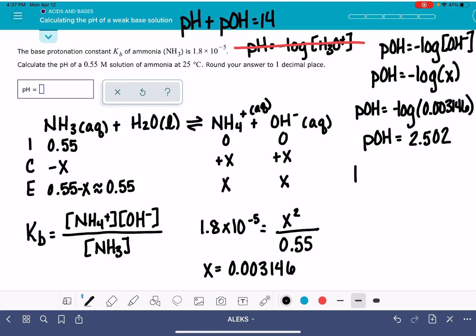Aleks wants us to calculate the pH. So we're going to go 14 minus the pOH. 14 minus the pOH is 11.498.